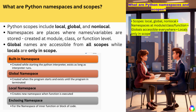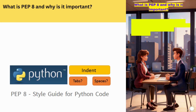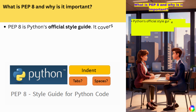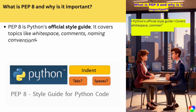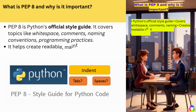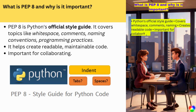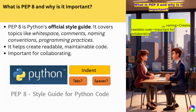Global names are accessible from all scopes while locals are only in scope. What is PEP8 and why is it important? PEP8 is Python's official style guide. It covers topics like whitespace, comments, naming conventions, and programming practices. It helps create readable, maintainable code and is important for collaborating.